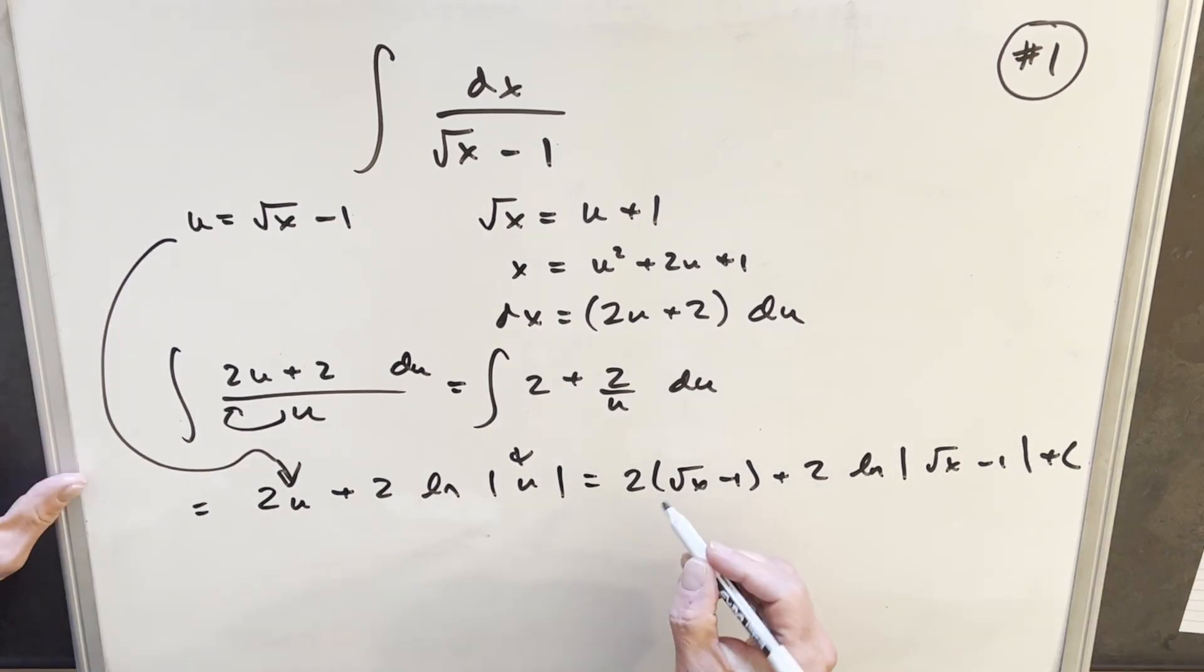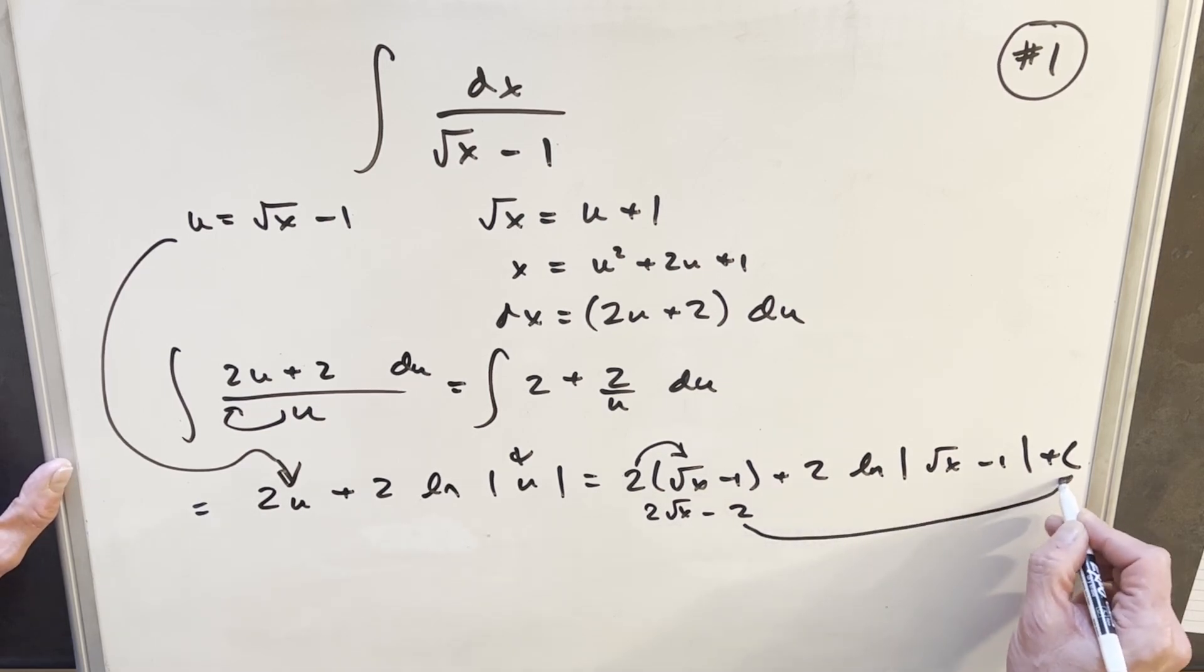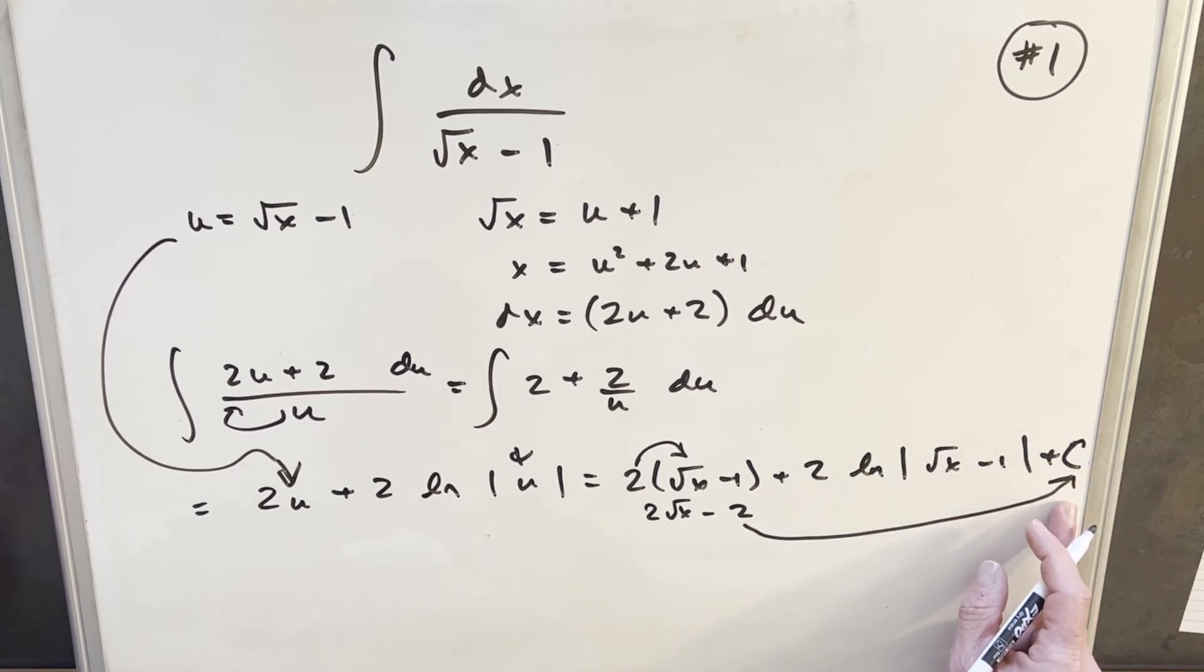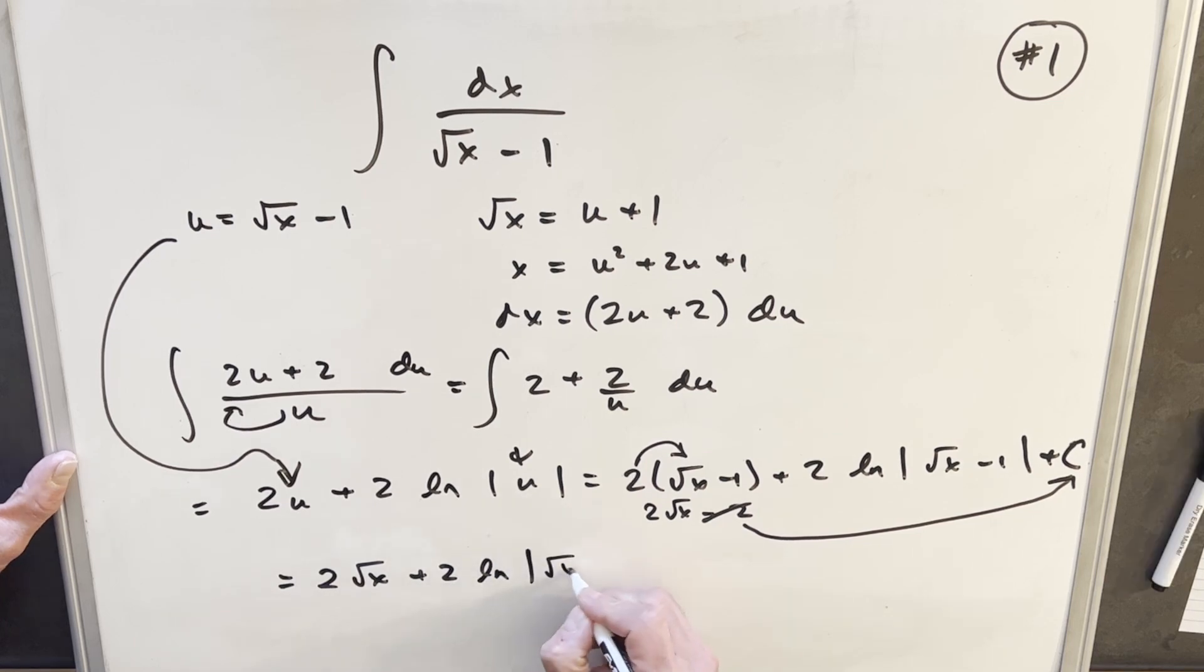Before we finish, let's notice that if you distribute this 2 inside, we get 2 square root of x minus 2. Well, 2 is just another constant, so it can be absorbed into the plus C. The plus C covers all constant values, so we'll cancel that out. Our final solution is 2 square root of x plus 2 natural log square root of x minus 1 plus C.